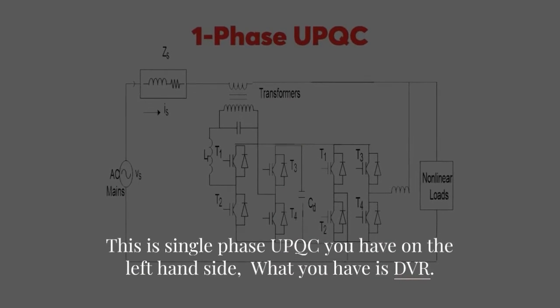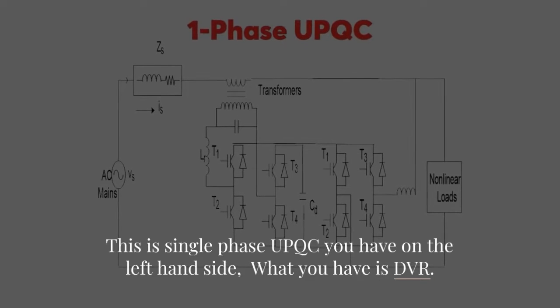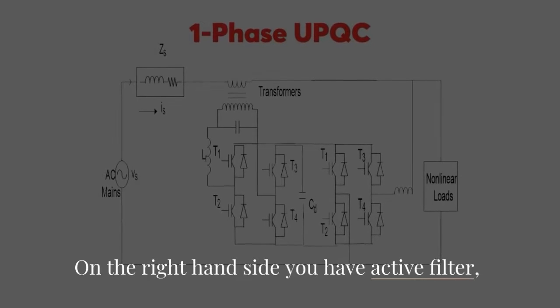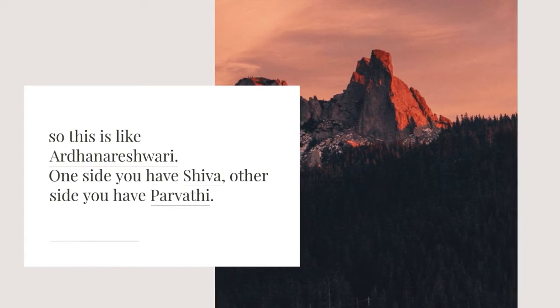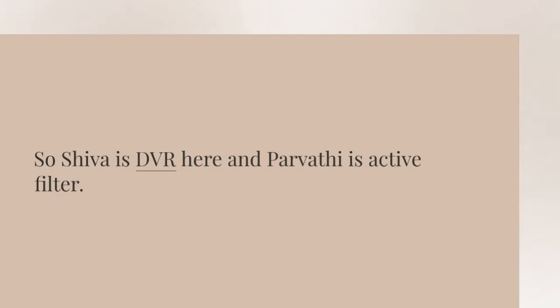This is single phase UPQC. You have on the left hand side DVR. On the right hand side you have active filter. So this is like Ardhanarishwari. One side you have Shiva, other side you have Parathi. So Shiva is DVR here and Parathi is active filter.